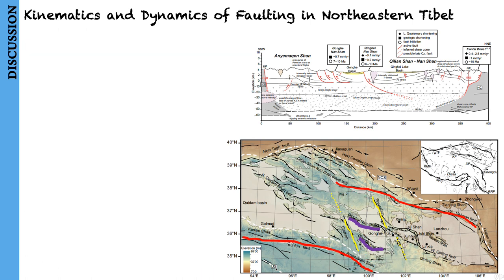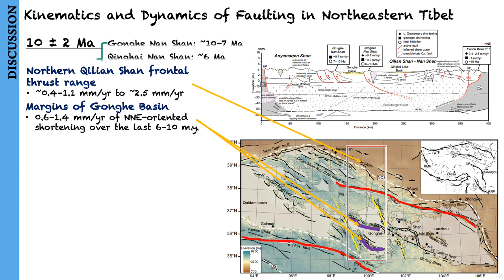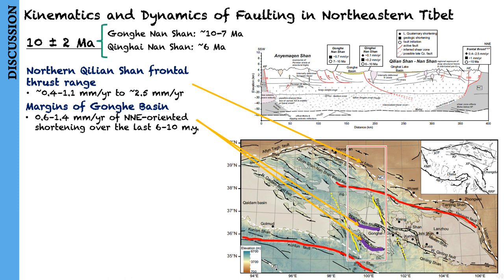To the north of the Anyemaqen Shan, shortening rates appear similar on opposing sides of the Qilian Shan, and the initiation ages of major thrust faults appear to be coordinated in time at around 10 plus or minus 2 million years ago, although their own results indicate an age of around 10 to 7 million years ago for initiation in the Gonghe-Nanshan and around 6 million years ago for the Qinghai-Nanshan in the Chaka region.